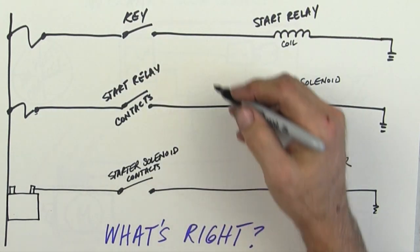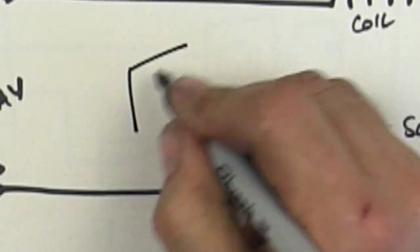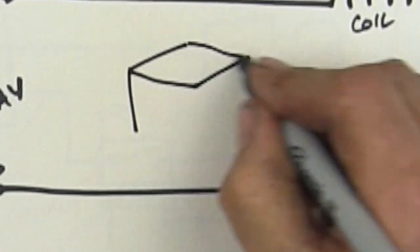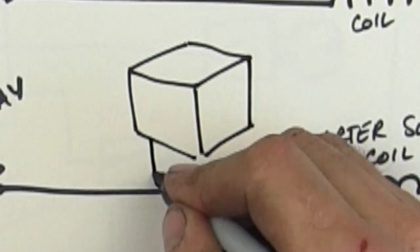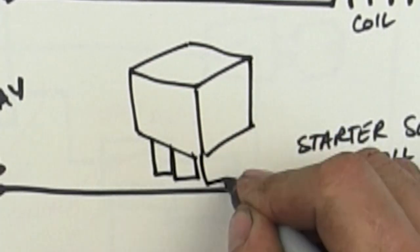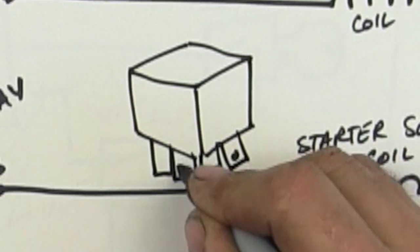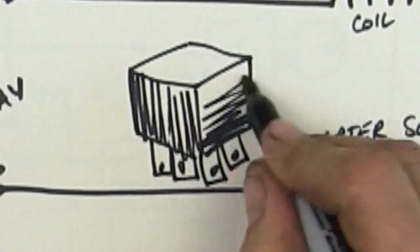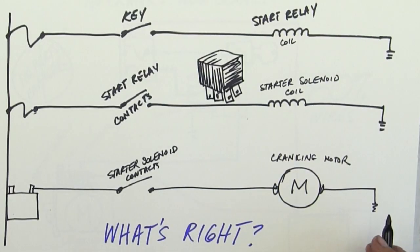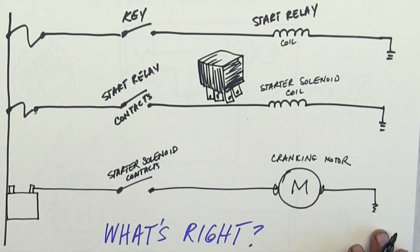So let's make sure we understand. We know what a key looks like. But the start relay looks like this. And it's usually black. And you don't know what's going on inside there.